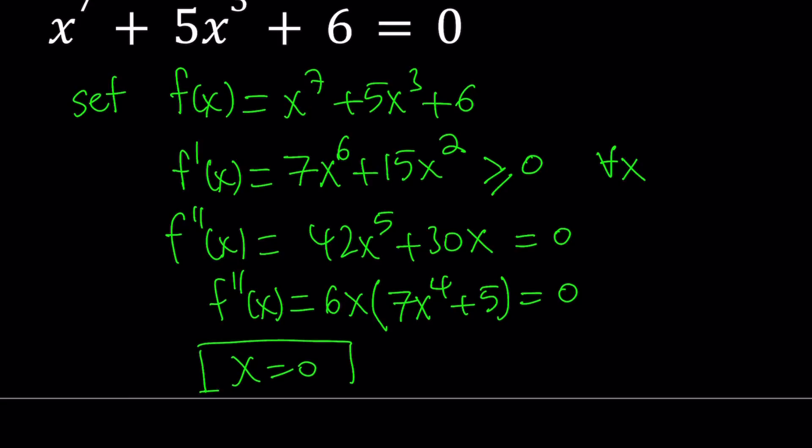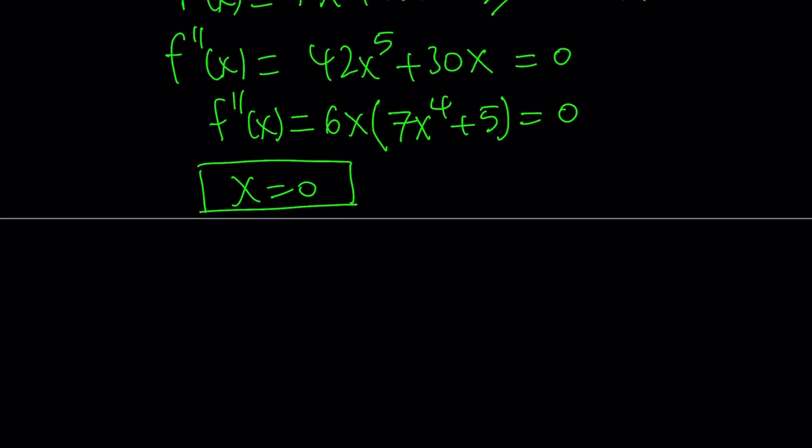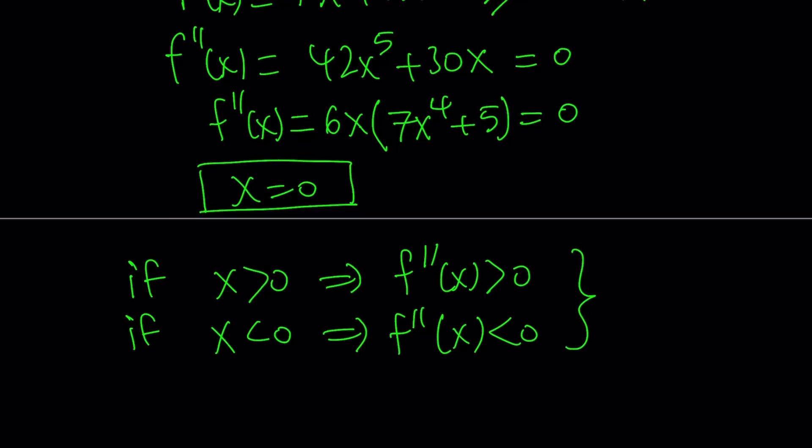And if you look at this closely, for example, if x is positive, then the second derivative is going to be positive, because 6 times positive. And if x is negative, then the second derivative is going to be negative. What is that supposed to mean? We have an inflection point. So, x equals 0, we have an inflection point, which is where the concavity changes. A function goes from concave up to concave down, or vice versa.